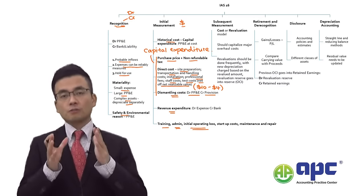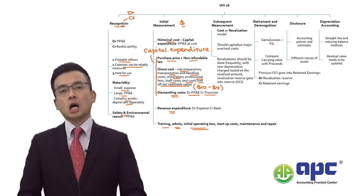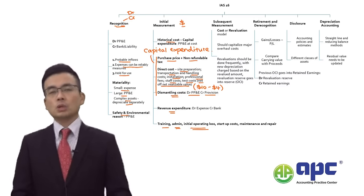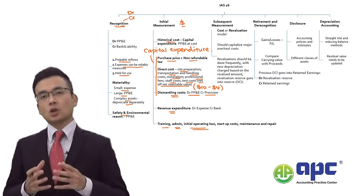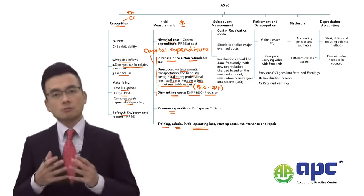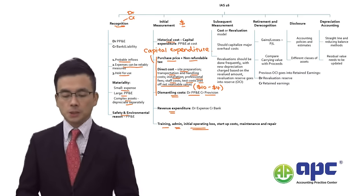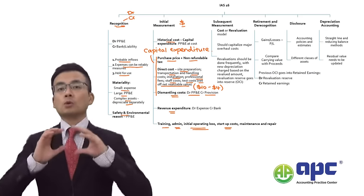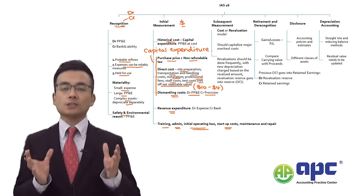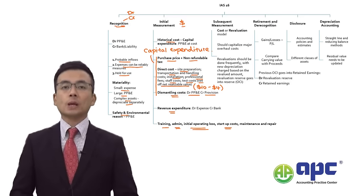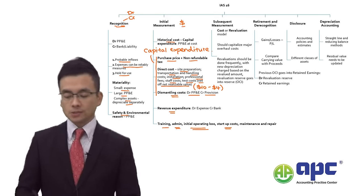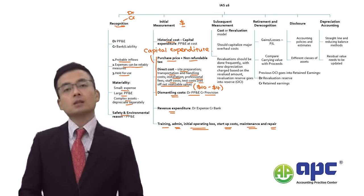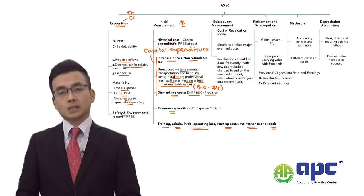Initial operating losses — such as discounting products or giving them away before launch — must be expensed rather than capitalized as PP&E. Startup costs, such as obtaining a license to set up the company instead of buying PP&E, must also be expensed, as must maintenance and repair expenses.